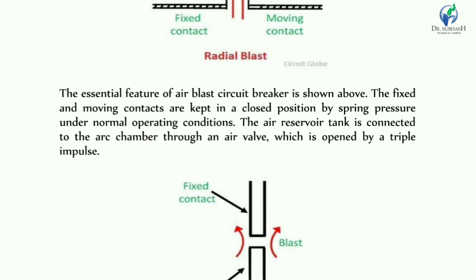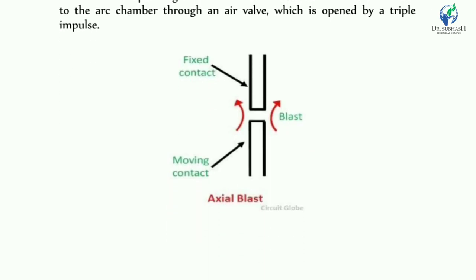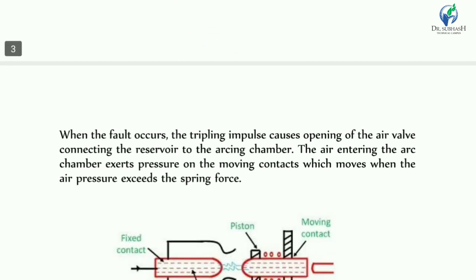The essential feature of an air blast circuit breaker is that the fixed and moving contacts are kept in the closed position by spring pressure under normal operating conditions. The air reservoir tank is connected to the arc chamber through an air valve. The air reservoir tank is opened by a trip impulse. When a fault occurs, the tripping impulse causes the opening of the air valve connecting the reservoir to the arc chamber, and the moving contact is then extracted as the air pressure overcomes the spring force.